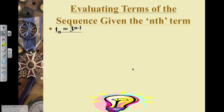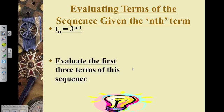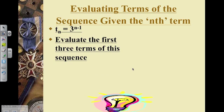So if we have this general term formula and I'm supposed to evaluate the first three terms of this sequence, I would simply substitute n is equal to 1 in order to generate T1. So 3 to the power of 1 minus 1 gives me a value of 3 to the power of 0, and anything to the power of 0 is equal to 1.